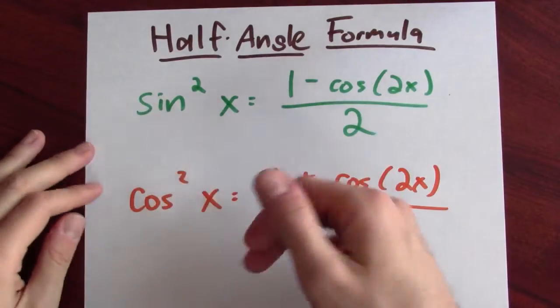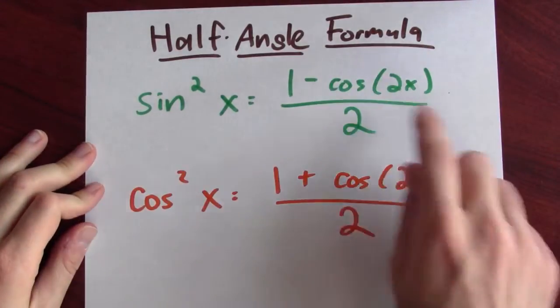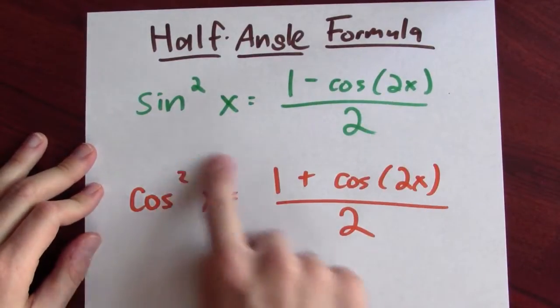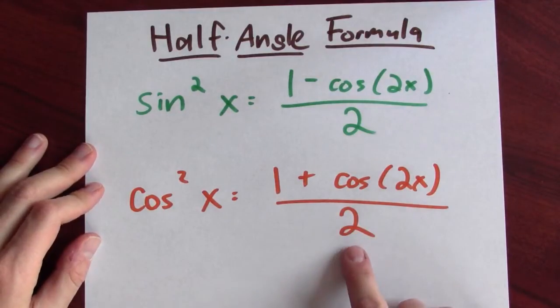Instead, I'll use an identity, the half angle formula. It lets me replace sine squared of x by 1 minus cosine of 2x over 2. And it lets me replace cosine squared of x by 1 plus cosine 2x over 2. How do those help?